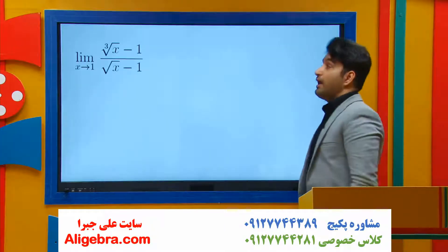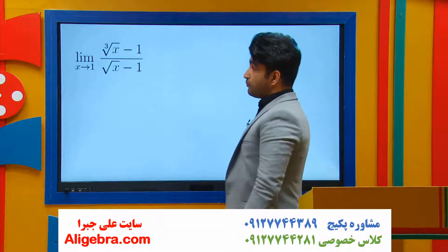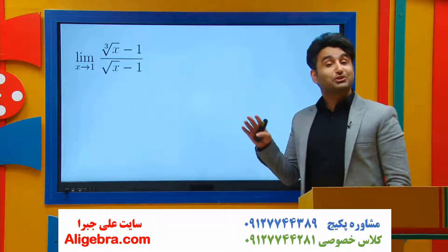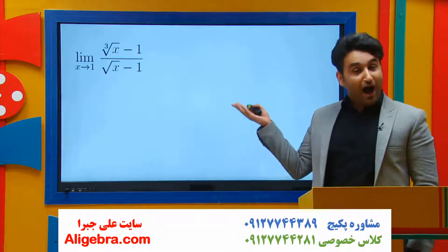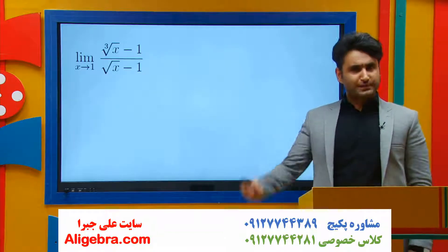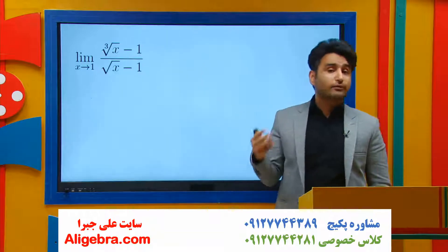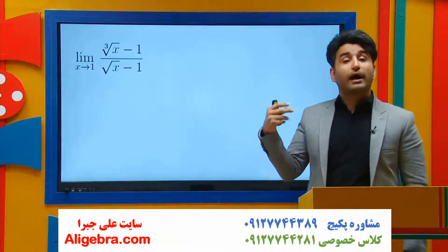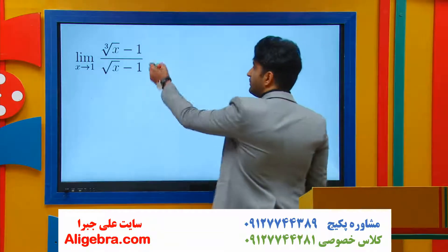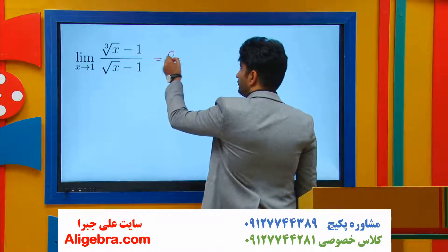Evaluate the limit of cube root of x minus 1 on top, square root of x minus 1 on the bottom as x approaches 1. Step 1, to solve any kind of limit is using direct substitution. So plugging 1 into the problem gives me 0 over 0.